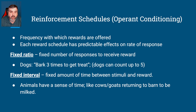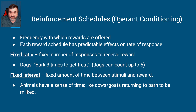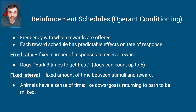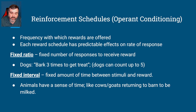Fixed ratio is a fixed number of responses required in order to receive the reward. So maybe the rat has to push a button three times, or you get the dog to bark three times and the dog gets a treat. Dogs have been proven to be able to count to at least up to five, so if you train them, they can associate that number and learn it — they can count to an extent.